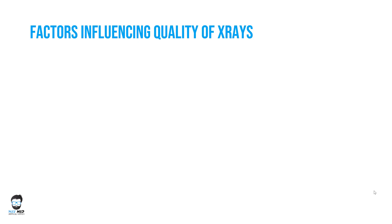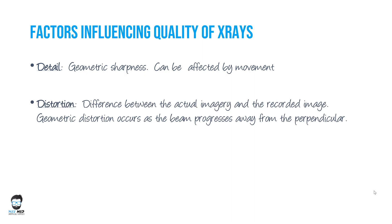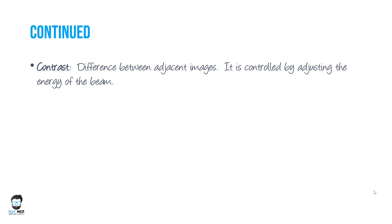There are some factors which can influence the quality of x-rays — not all x-rays are the same. The first is detail or geometric sharpness, which can be affected by patient movement. For example, a nervous patient or a patient with Parkinsonism who has tremors can affect the quality of the x-ray. The second factor is distortion — a difference between the actual image and the recorded image — which can occur due to electromagnetic interference or a fault in the machine.